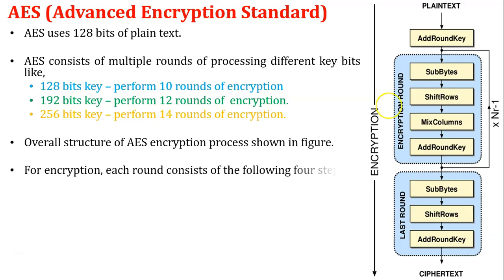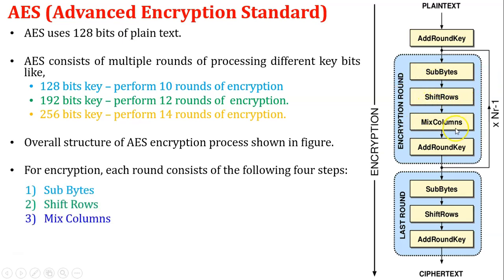In the AES encryption process, each round consists of the following four steps: the first is substitution bytes, the second is shift rows, the third is mix columns, and the fourth is add round key.